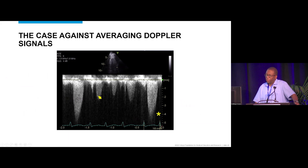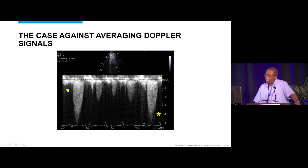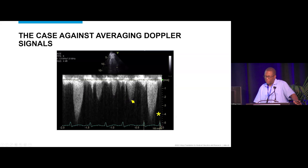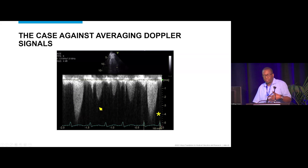Guidelines instruct us to average five of these beats instead of taking the single highest. But within those five beats, you might see: below 2 m/s — no aortic stenosis; above 2 m/s — mild AS; and then severe AS. So in five consecutive beats, you have no AS, mild AS, and severe AS all at once.